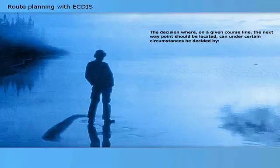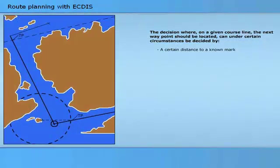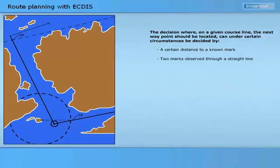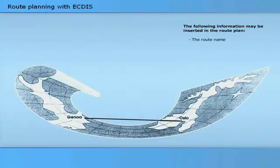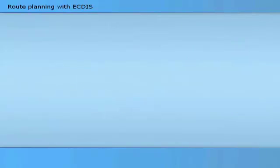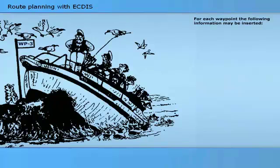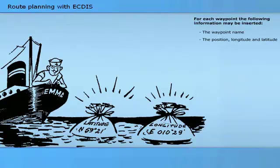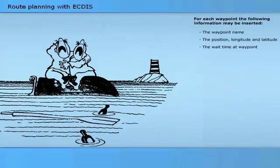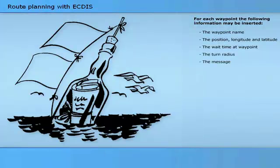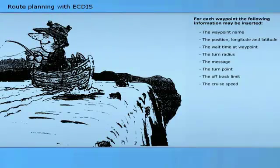The decision of where on a course line the next waypoint should be located can be decided by a certain distance to a known mark, or two marks observed through a straight line. Turn point functions allow the navigator to use these criteria to determine points geometrically in the chart. The following information may be inserted in the route plan: the route name, start time for route, and for each waypoint: the waypoint name, position (longitude and latitude), wait time at waypoint, turn radius, message, turn point, off-track limit, cruise speed, and max speed.